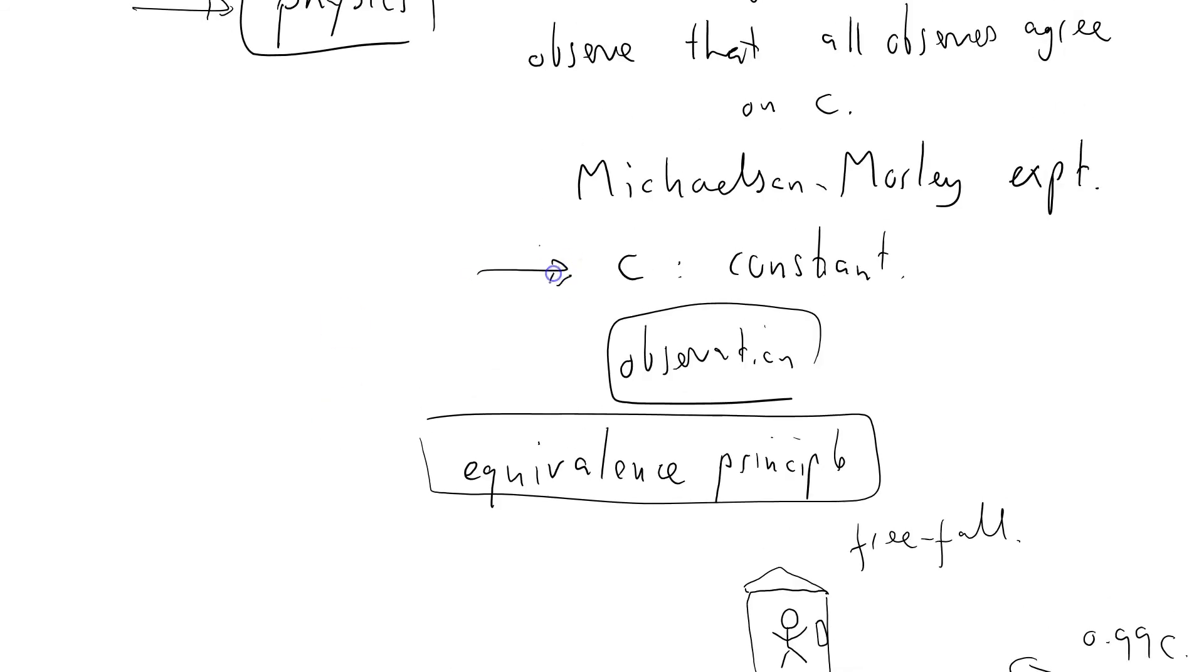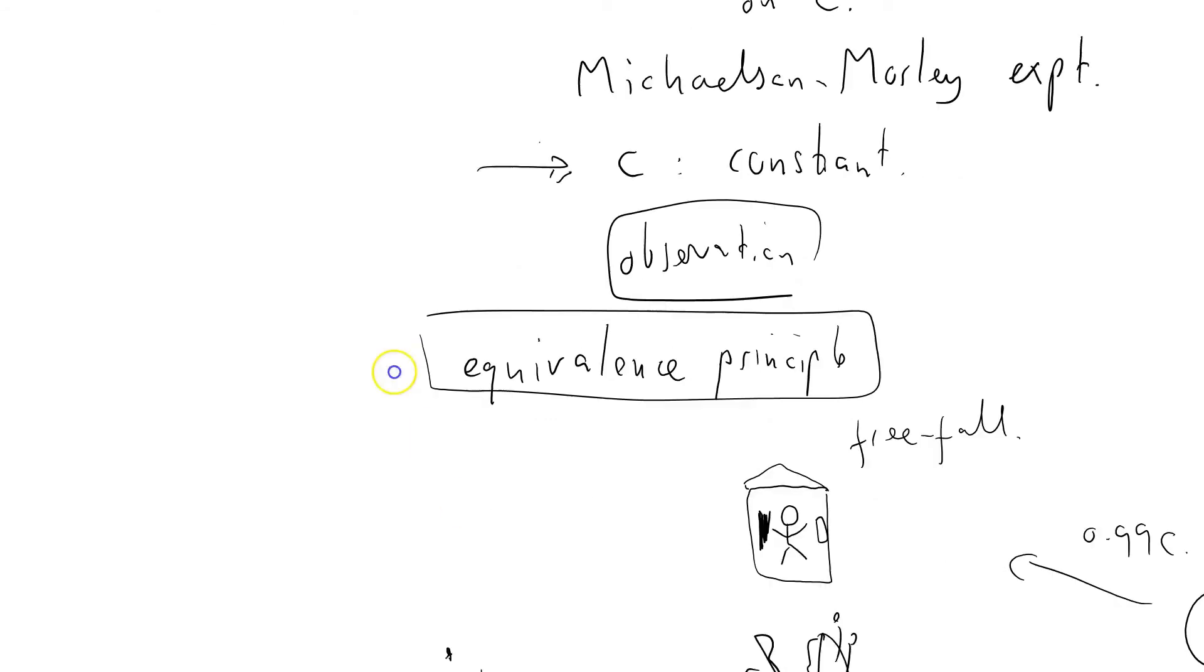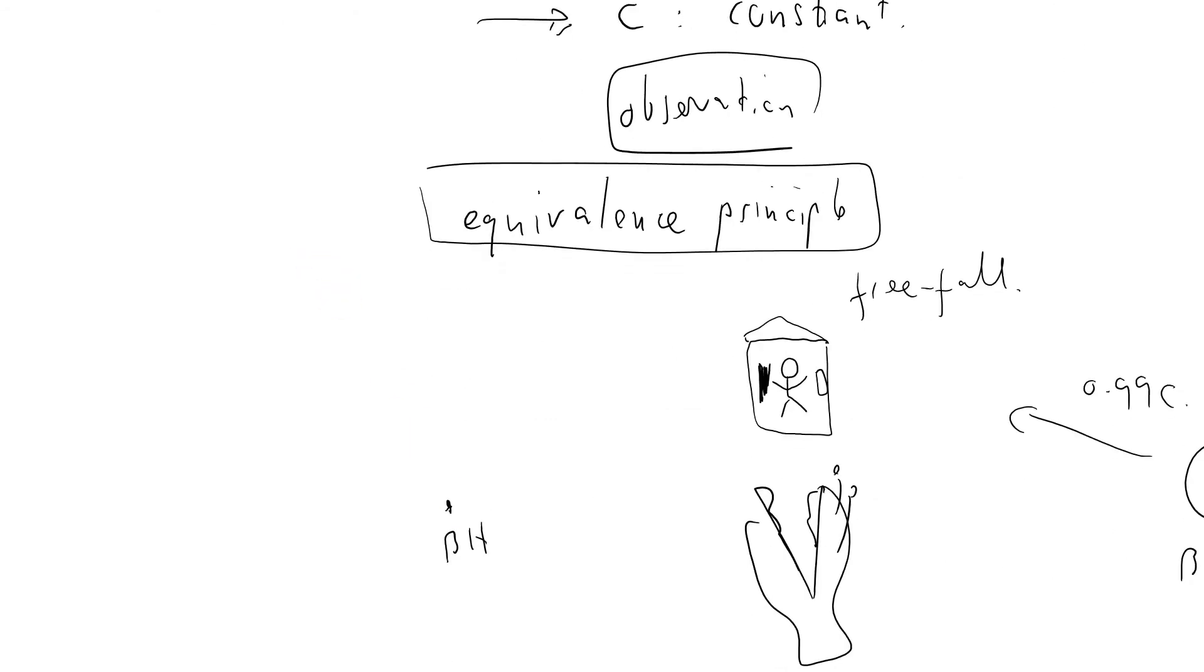In particular, I will still observe the speed of light being constant. I might set up a little experiment with light bouncing around. There is no way, according to the equivalence principle, that what is occurring outside my box, so long as I'm in free fall, will affect the laws of physics as I observe them locally inside my box. That's the equivalence principle. These are not mathematical statements.